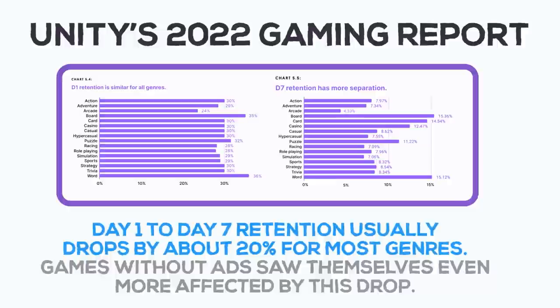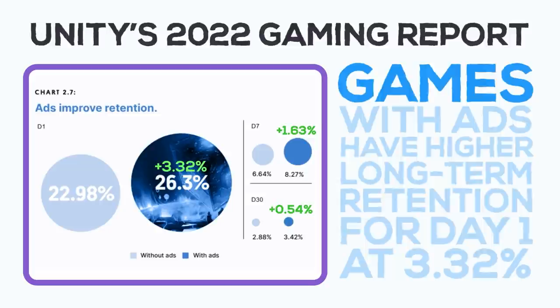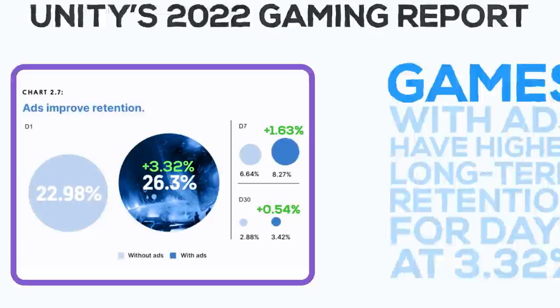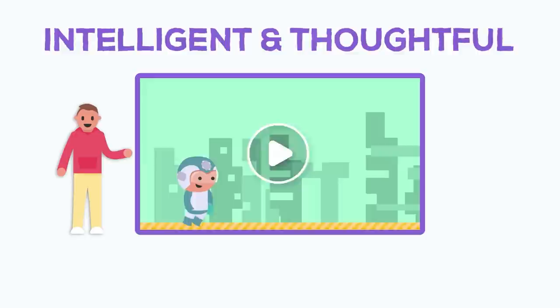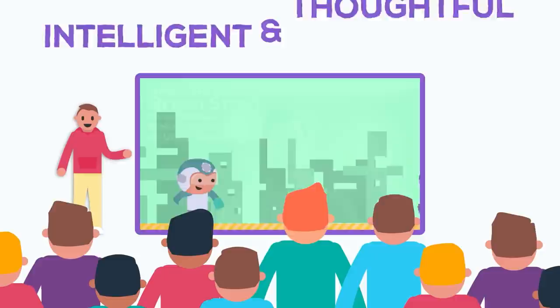According to Unity's 2022 gaming report, day 1 to day 7 retention usually drops by about 20% for most genres. Games without ads saw themselves even more affected by this drop. It was also noted that games with ads have higher long-term retention: day 1 at 3.32%, day 7 at 1.63%, and day 30 at 0.54%. With these stats in mind, there is definitely a case for indie devs to dabble with intelligent and thoughtful ad implementation. The best strategy is to make monetization a part of the creative design process and put as much care and thought into it as the core game loop itself — in other words, make it fun for both parties involved.